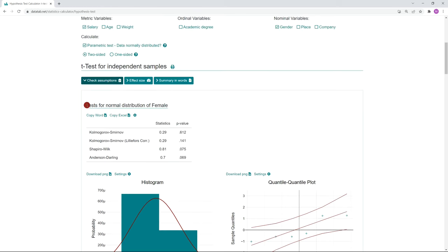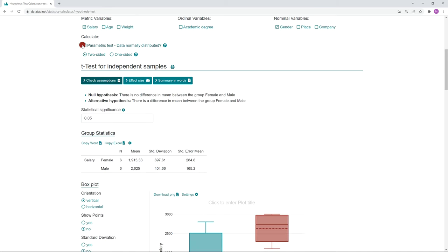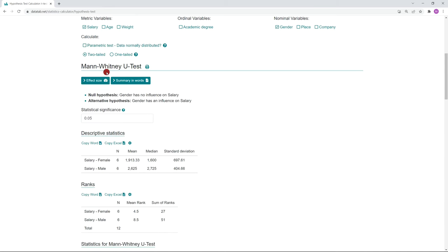If the precondition is not met, you would click on this and a non-parametric test, the Mann-Whitney-U test would be calculated. The Mann-Whitney-U test does not need normally distributed data. Thanks for watching and I hope you enjoyed the video.